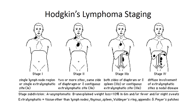Hodgkin's lymphoma staging differs from non-Hodgkin's. Stage I involves only a single lymph node region or single extra-lymphatic site. Stage II involves two or more sites on the same side of the diaphragm. Stage III involves both sides of the diaphragm or spleen involvement. Stage IV is diffuse involvement of extra-lymphatic sites plus nodal disease.